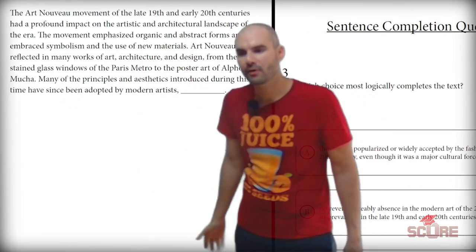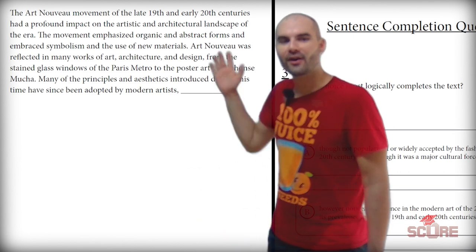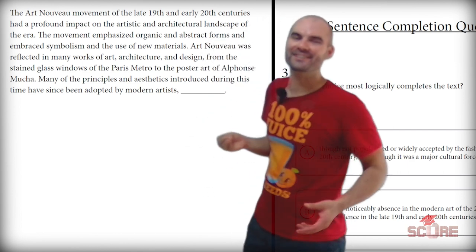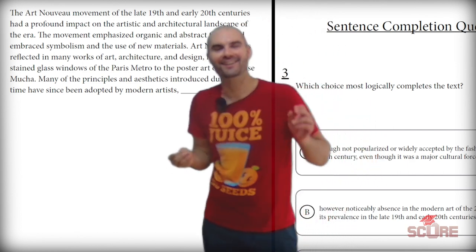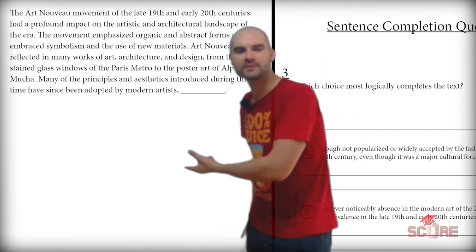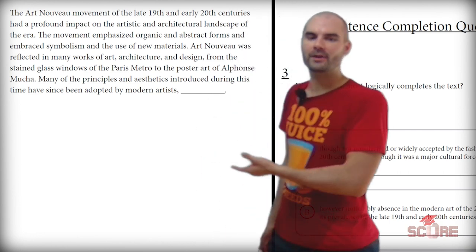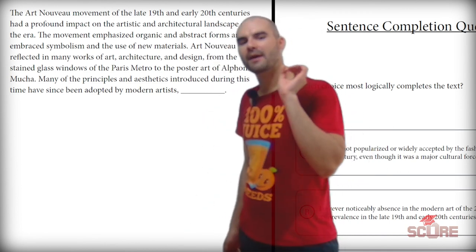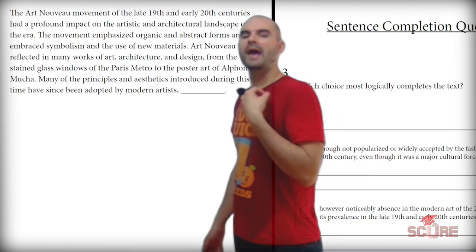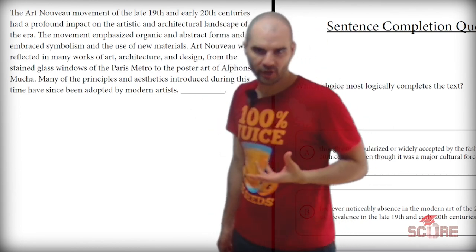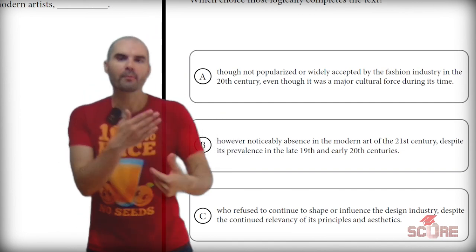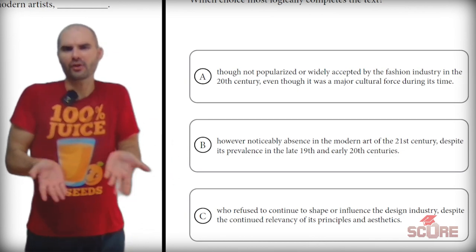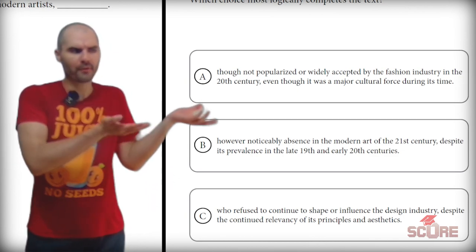Question three, we get the Art Nouveau movement. The Art Nouveau movement of the late 19th and early 20th centuries had a profound impact on the artistic and architectural landscape of the era. Many of the principles and aesthetics introduced during this time have been adopted by modern artists — and we're going to finish that sentence. What I understand is that we're going to talk about something related to those modern artists and how they're applying this old movement to their work today. Since we're focusing on modern artists, I don't think we're going back in time, which is what A and B do.